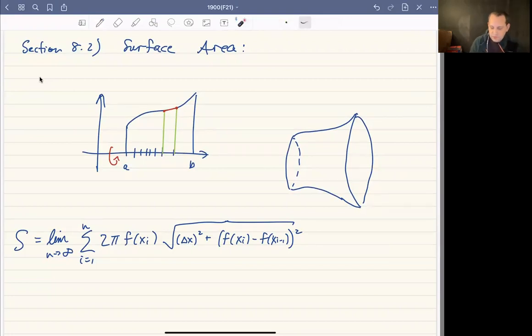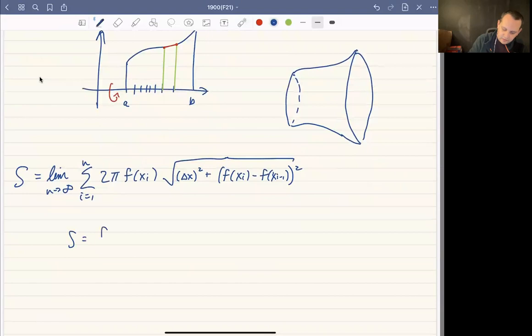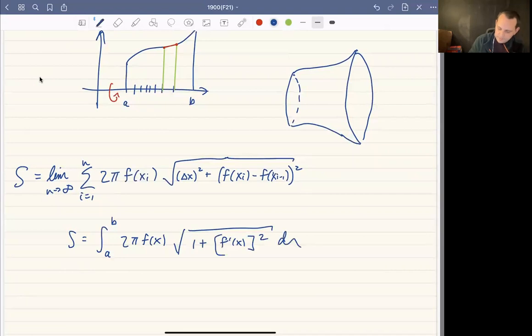And same trick as before, we factor out the Δx, put that in the denominator here, you get one plus the derivative squared with the Δx outside. And it turns out that your surface area formula that you're going to get is going to be the integral from a to b of 2π. So this is just going to be 2π f(x) times the square root of one plus the derivative squared. Okay, so that's going to be your surface area formula that we're going to look for there.